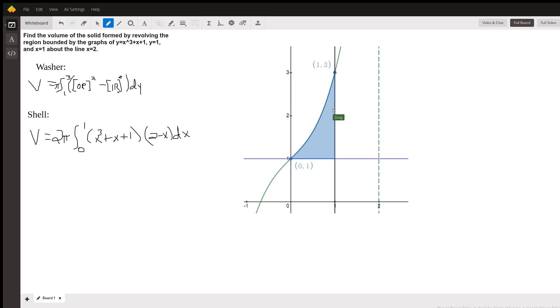So you kind of go like this, and it would be the outer radius squared, which would be this distance.